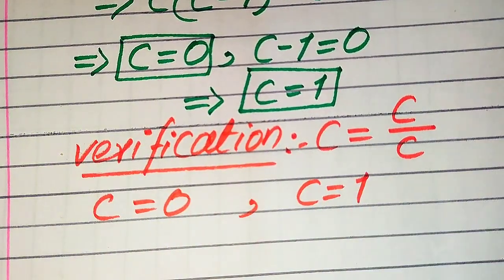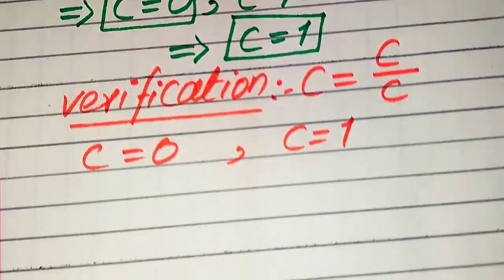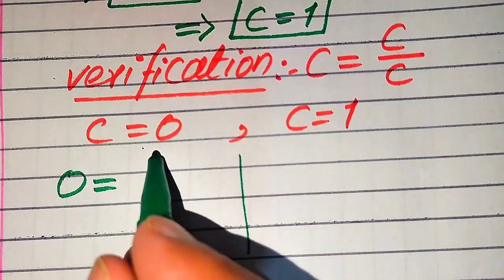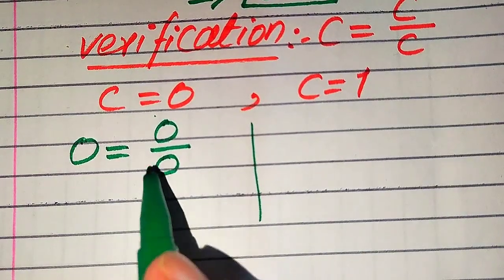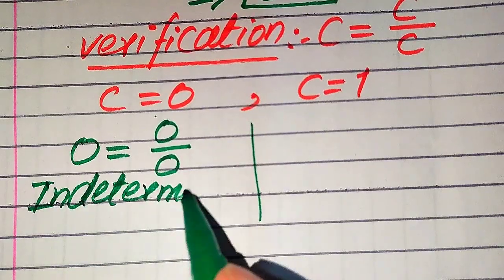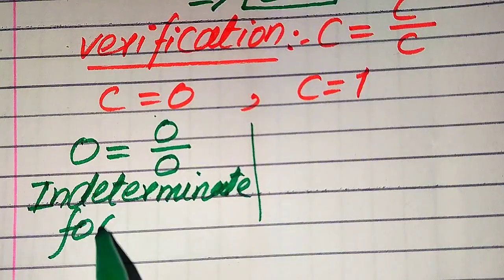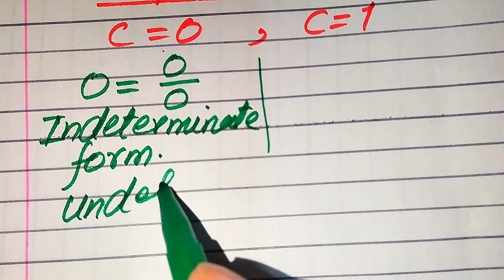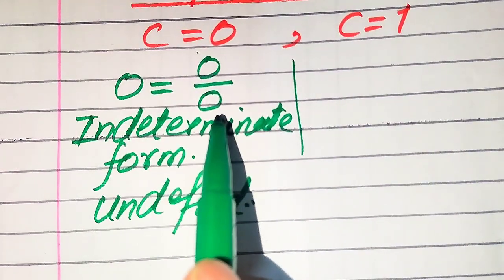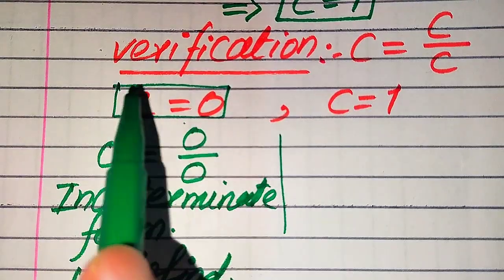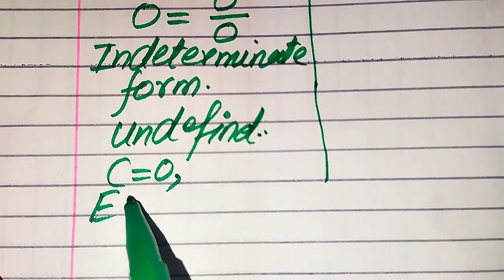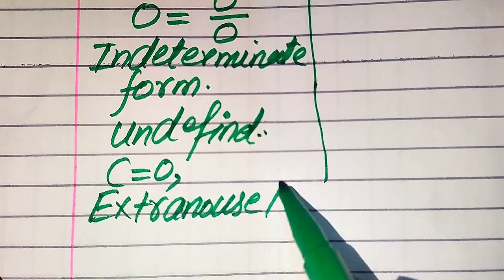First, we focus on c equals 0. When we substitute this value on both sides, we get 0 equals 0 divided by 0. But 0 divided by 0 is the indeterminate form — in other words, it is undefined. Since the right-hand side is undefined, both sides are not equal. We conclude that c equals 0 does not satisfy the given equation, so c equals 0 is an extraneous root.